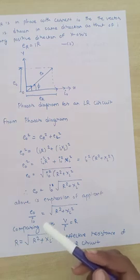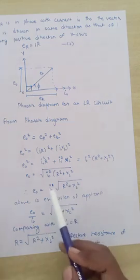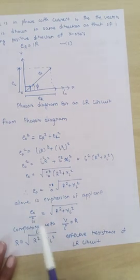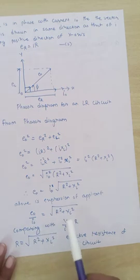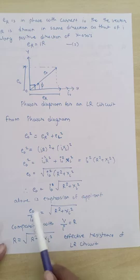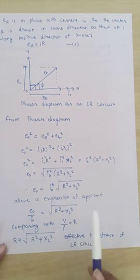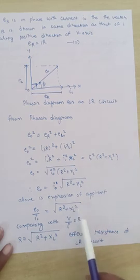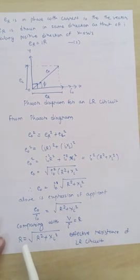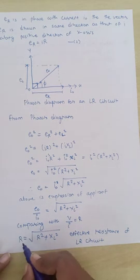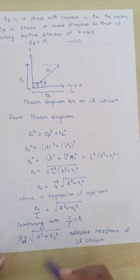For the effective resistance, we rearrange to get E₀/I₀ = √(R² + XL²). Comparing this with Ohm's relation V/I = R, we find that the effective resistance of the LR circuit equals √(R² + XL²). This quantity is called the effective resistance, or impedance, of the LR circuit.